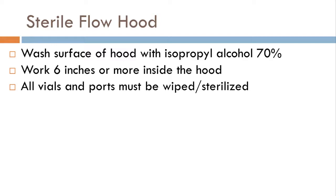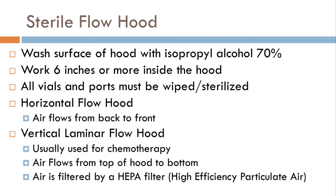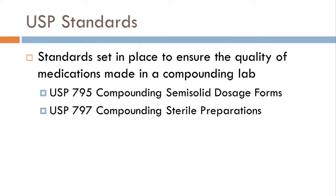A horizontal flow hood - the air flows from the back to the front, so your HEPA filter is in the back. A vertical laminar flow hood is usually used in chemotherapy, where the air flows from the top down to the bottom. The air is filtered by a HEPA filter in both of these. HEPA stands for high efficiency particulate air. It's filtering out all those particles - if you've ever seen sunlight shine through a window, you can see all that dust and particles in the air. These hoods keep that from getting on your preparations.